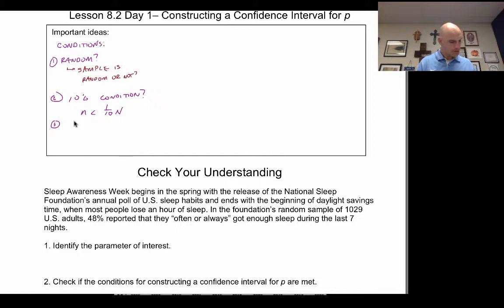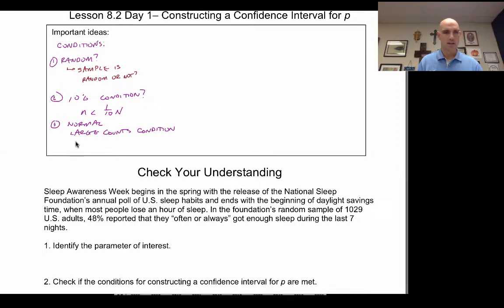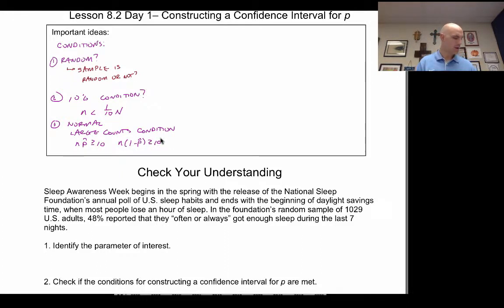The third condition is normality — the large counts condition. Is n times p-hat greater than or equal to 10? And is n times (1 − p-hat) greater than or equal to 10? When both are true, we can assume things about standard deviation and normality, which allows us to do these calculations.